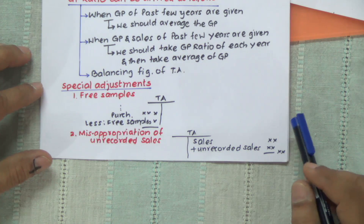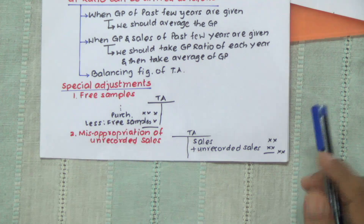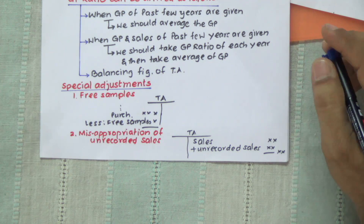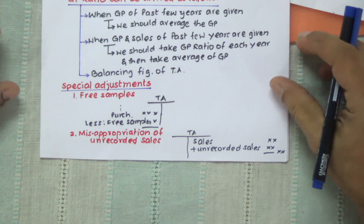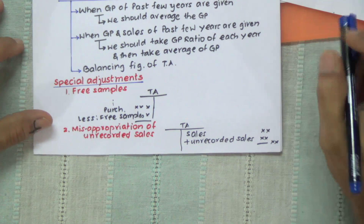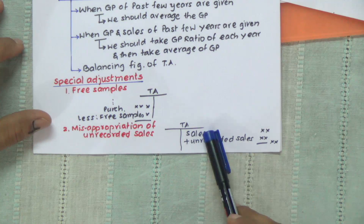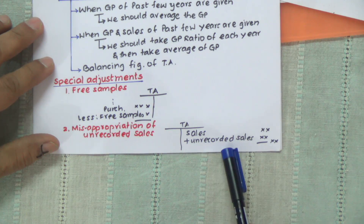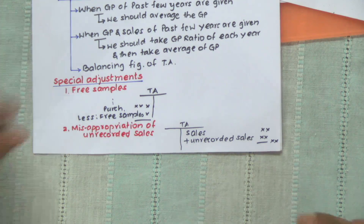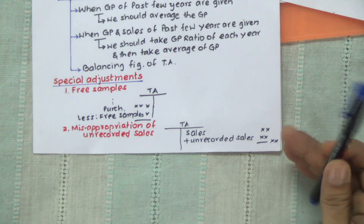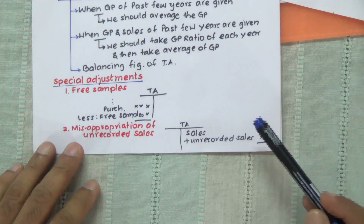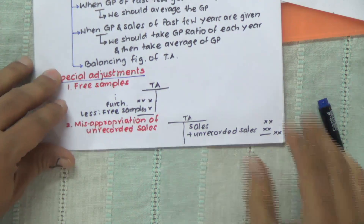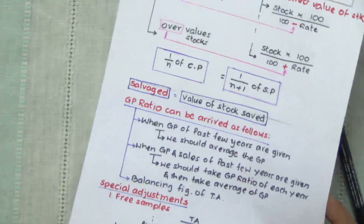At times in a few problems, we consider that there's a misappropriation of sales — sales which are unrecorded in the books. The treatment in the books for insurance claims purposes would be in the trading account. The credit side displays the sales, and we are going to record the unrecorded sales there, because to that extent our stock has gone down. So sales plus unrecorded sales — we total it up and take it over here. These are a few standard examples.